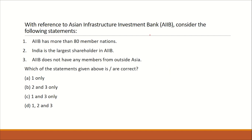Our first question is: with reference to Asian Infrastructure Investment Bank, consider the following statements. AIIB has more than 80 member nations. India is the largest shareholder in AIIB. AIIB does not have any members from outside Asia. This is a current affairs based factual question.